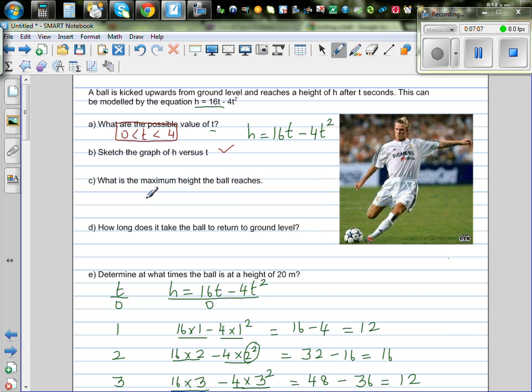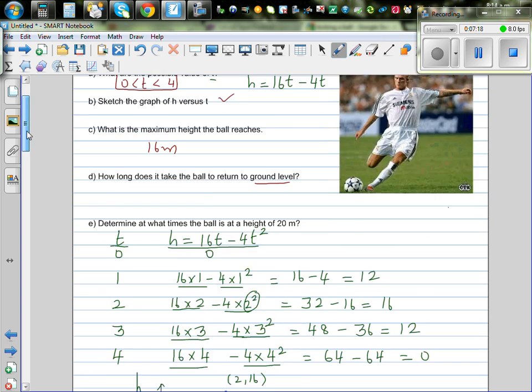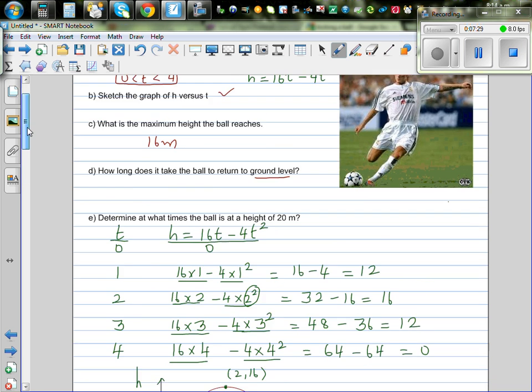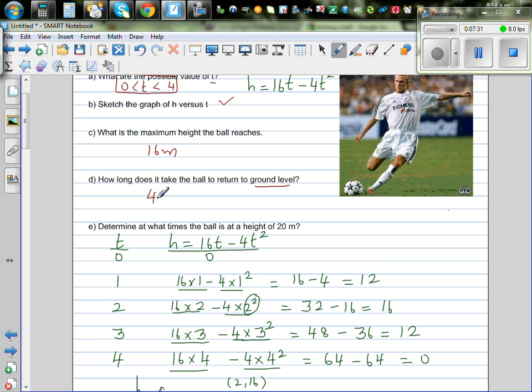What's the maximum height the ball reaches? It is 16 meters. How long does it take the ball to return to the ground? So look at the graph and tell me. How long does the ball remain on air. So after how many seconds it hits the ground. So well 4 seconds. So this is 4 seconds.